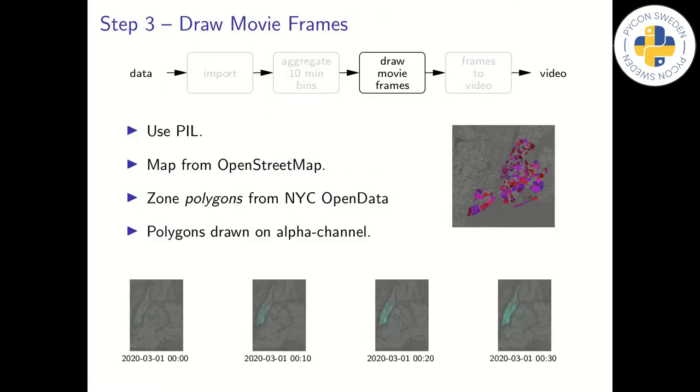Step 3, still image rendering. Using the dictionary created in the previous step, we just read one item at a time and draw a frame corresponding to the item's contents. We can do this completely in parallel, rendering one frame per CPU core. As mentioned earlier, we rely on the Python image library. Zone polygon definitions matching the dataset are also available from the New York City open data site. And we fetch the background map from OpenStreetMap.